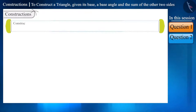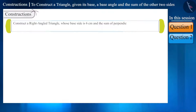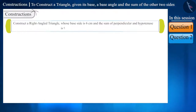Construct a right-angled triangle whose base side is 6 cm and the sum of the perpendicular and hypotenuse is 9 cm. Also, verify your construction.